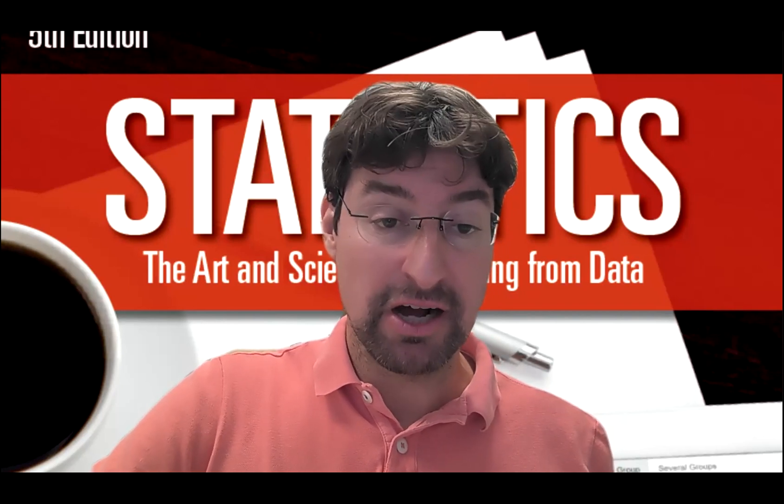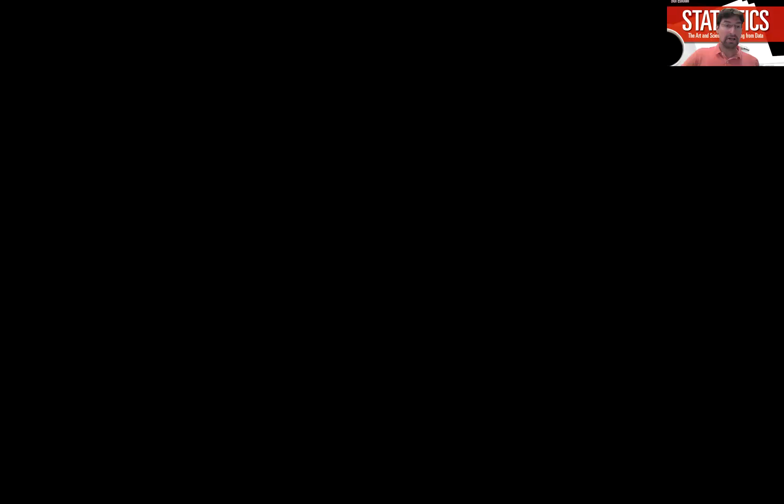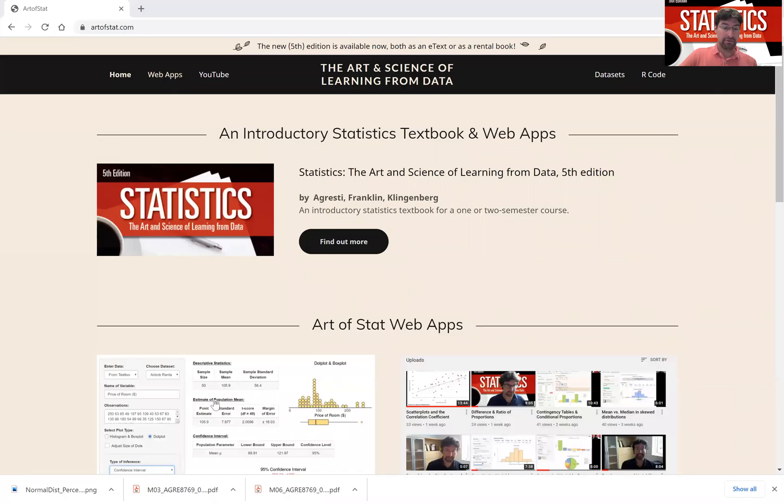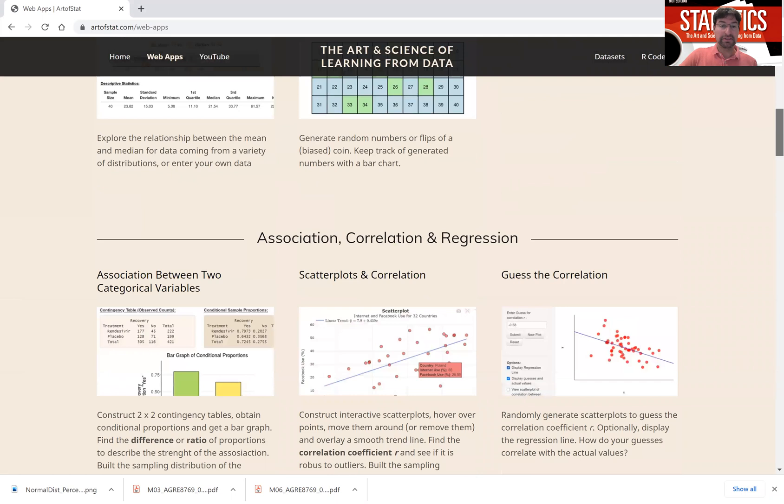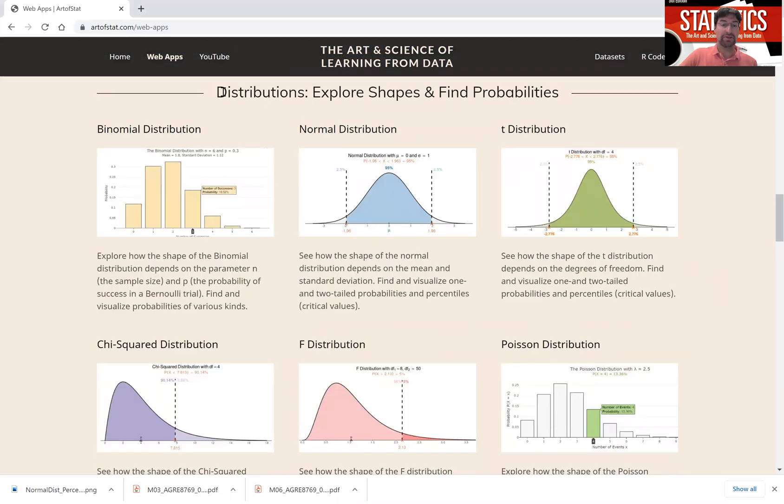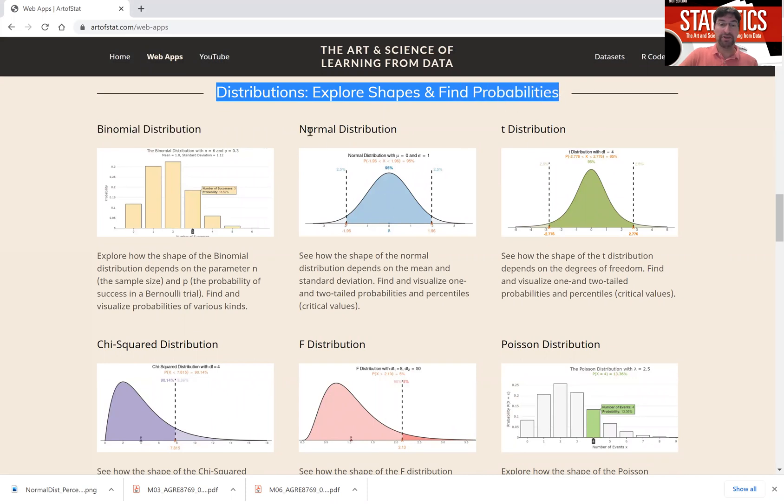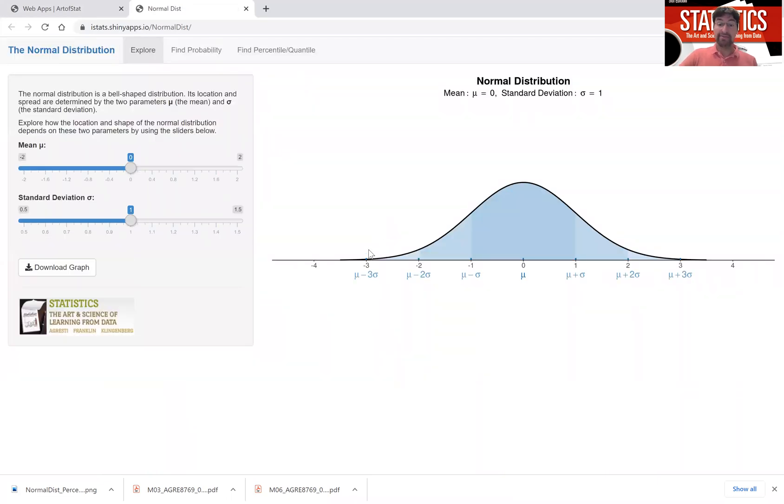Let me go to the artofstat.com website which is right here. I went to artofstat.com and click on web apps up here or down here. This will bring you to the web apps and then you can scroll down a couple of apps to go to the section that is titled Distributions: Explore Shapes and Find Probabilities, and one distribution that's featured here is the normal distribution. Click on that app and what you will see is a plot or graph of the normal distribution showing up.